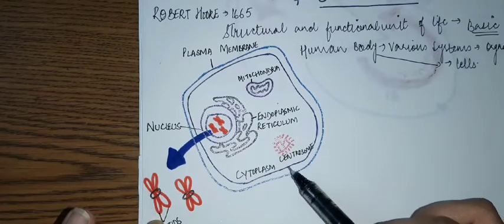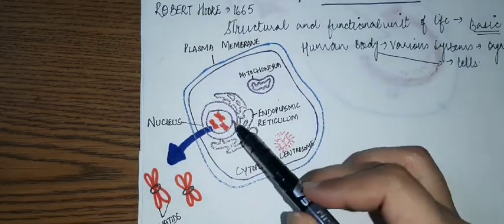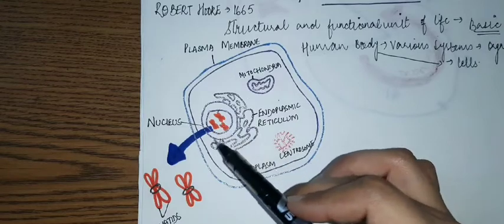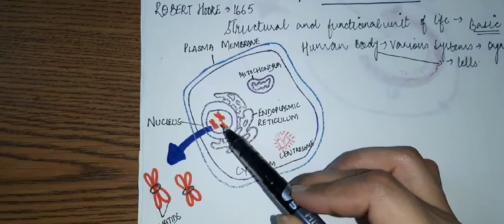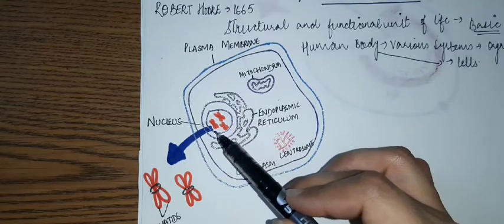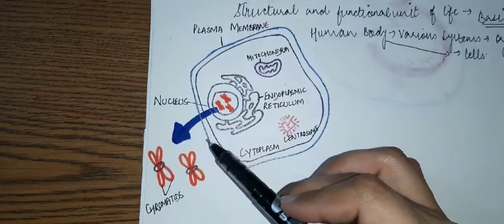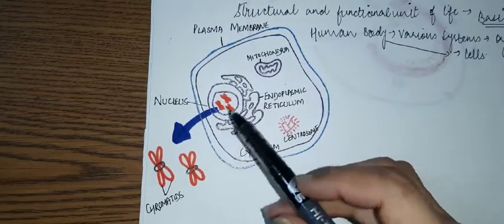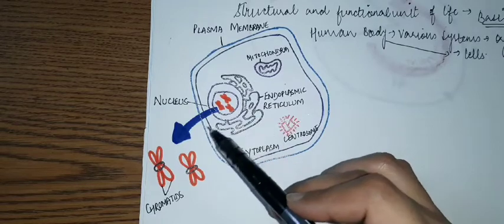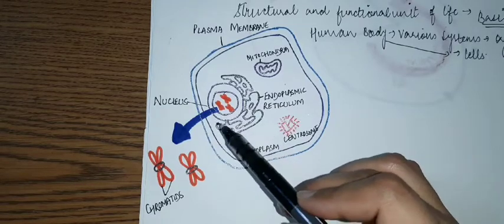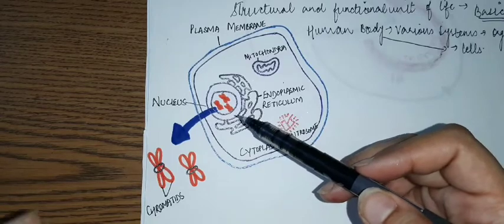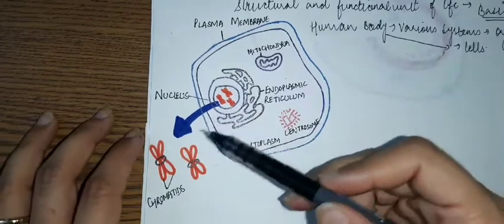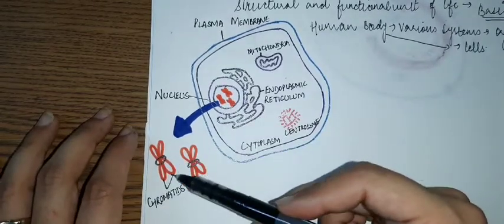The main base of the cell is the nucleus. Around it, we get the genetic material, that is the DNA. This DNA is packed up to form chromosomes.